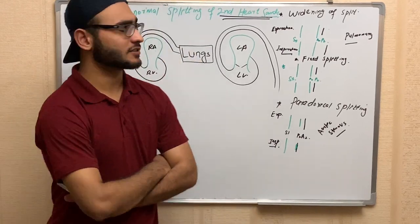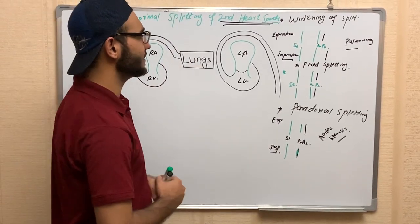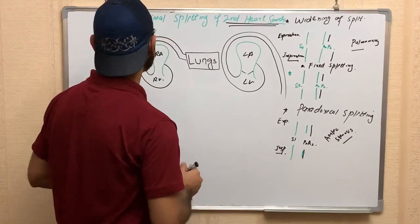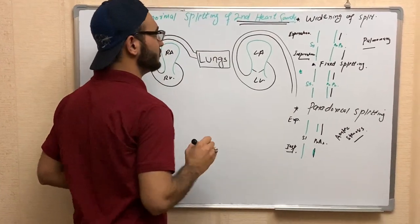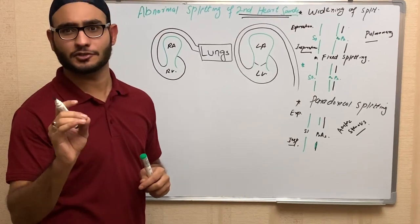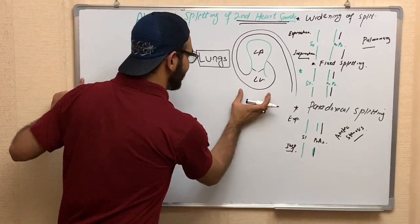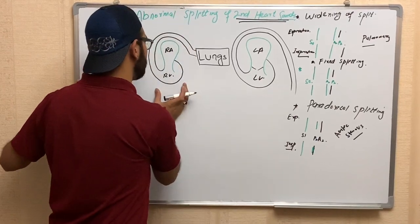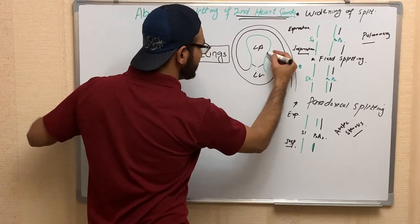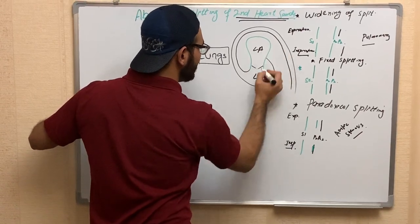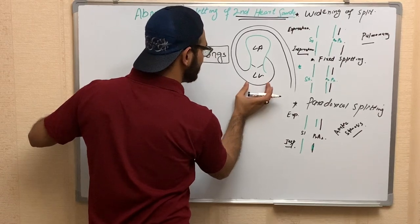Today we are going to discuss abnormal splitting of the second heart sound. To understand this, we should know the basic anatomy. Here is the left side of the heart and here is the right side of the heart. Blood enters from the left atrium to the left ventricle, and the same mechanism occurs on the right side.